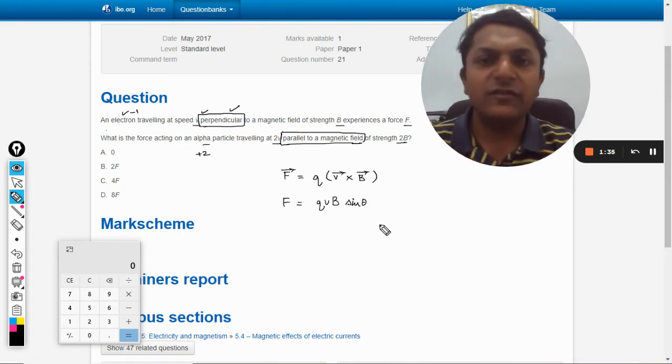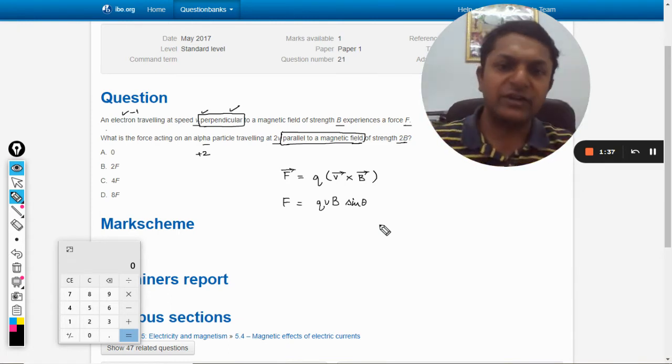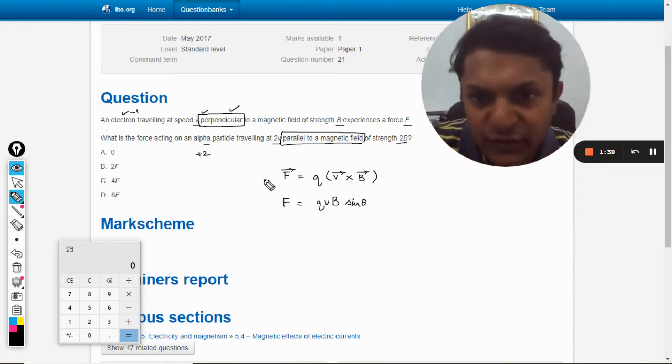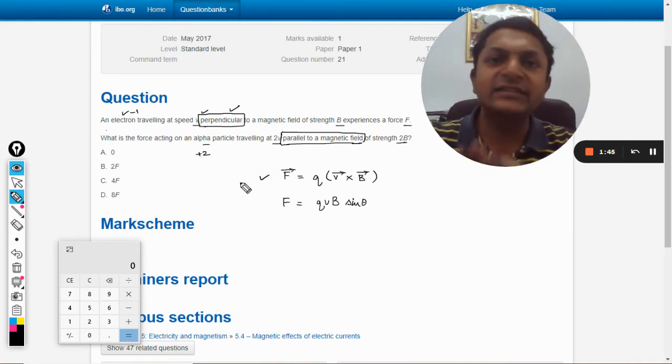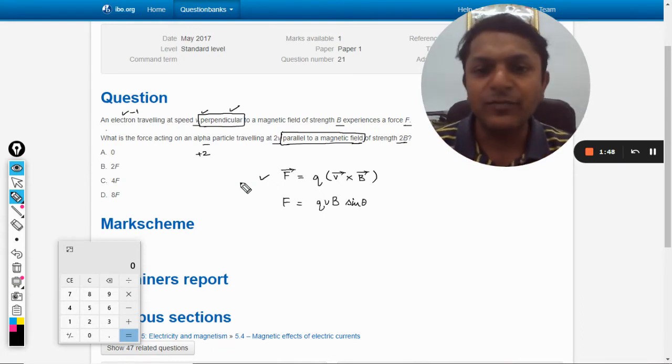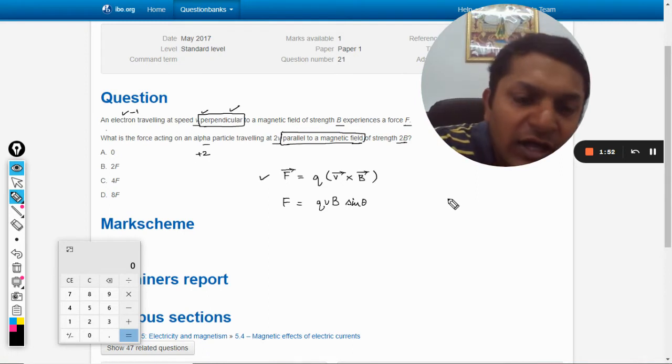Where θ is the angle between v velocity and B magnetic field. See, the first expression is the vector expression for the force, and the second one is the scalar - that is, it has only the magnitude, not the direction. So we need to consider sin θ. So what is this sin θ?